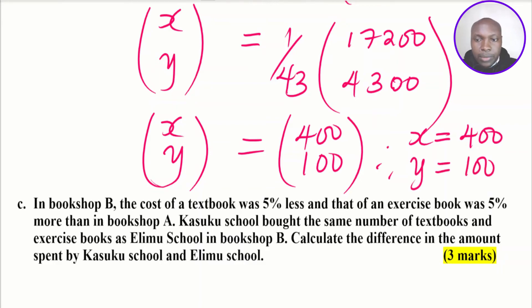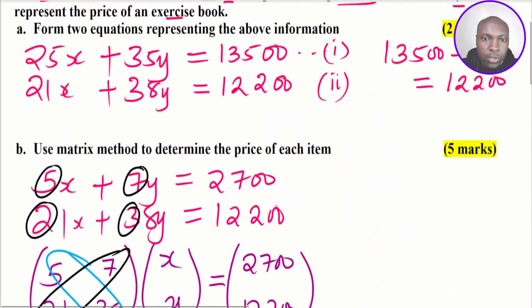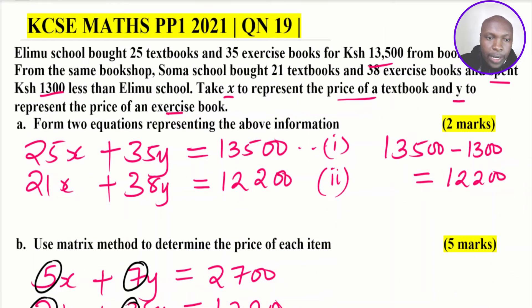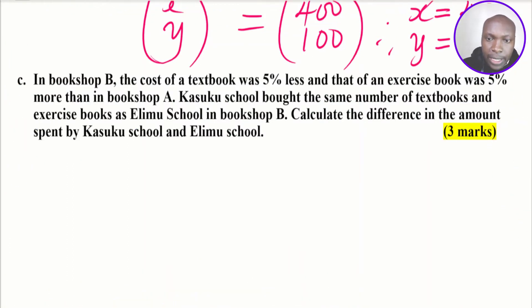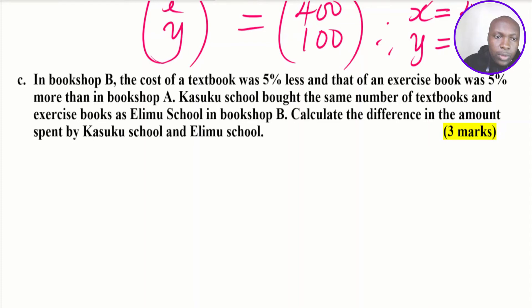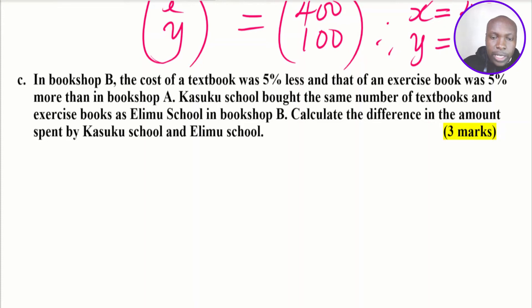Recall that X represents the cost of a textbook and Y represents the price of an exercise book. So the cost of one textbook is 400 shillings and one exercise book is 100 shillings. That is how you use the matrix method to solve that part. Now moving to Part 3: in Bookshop B, the cost of a textbook was 5% less and the cost of an exercise book was 5% more than in Bookshop A.